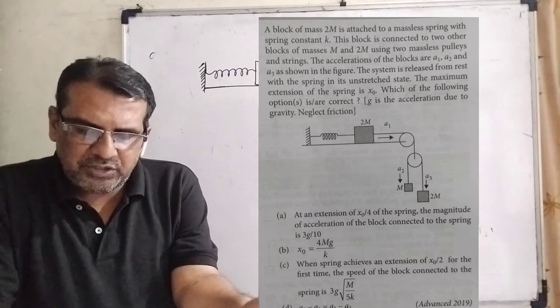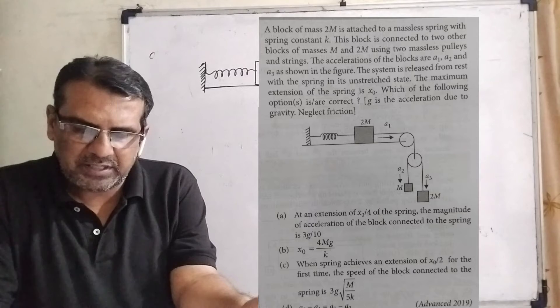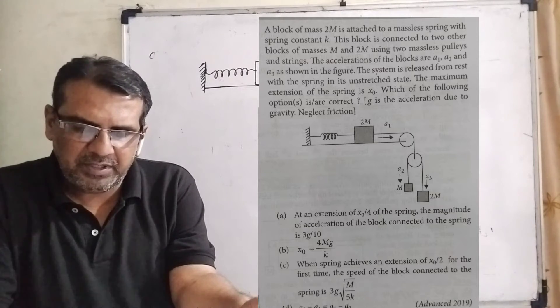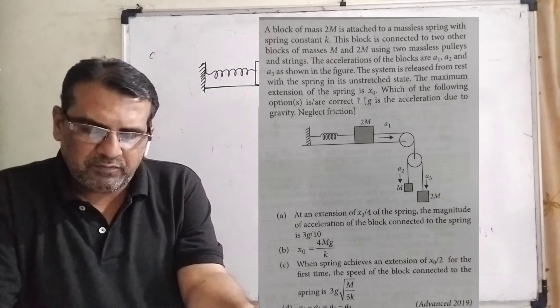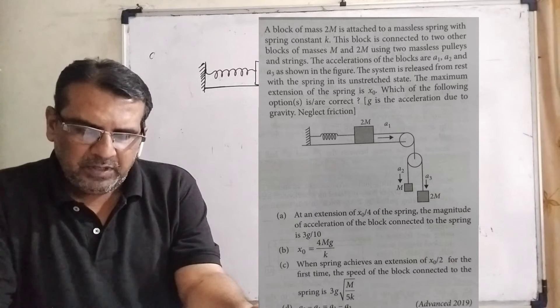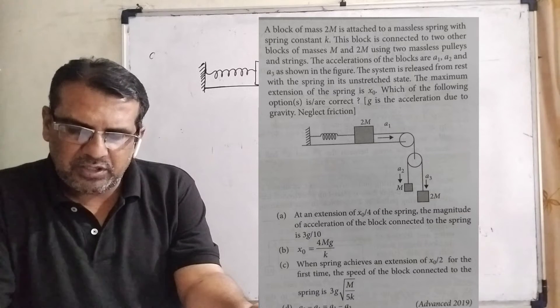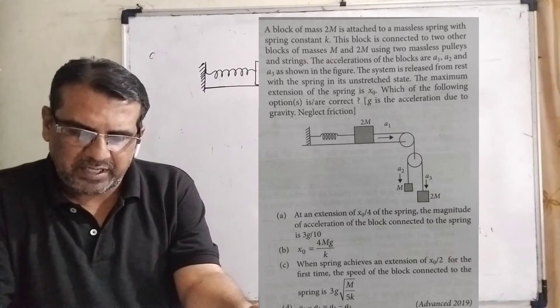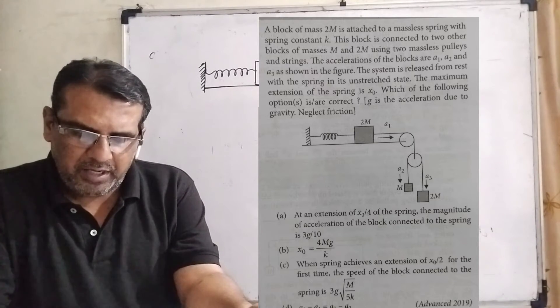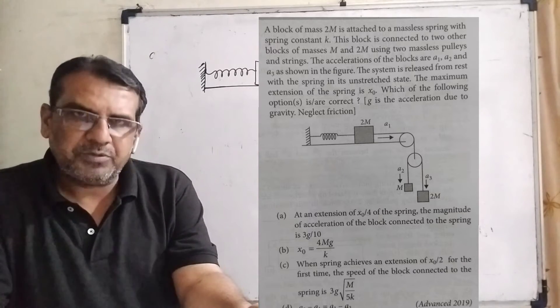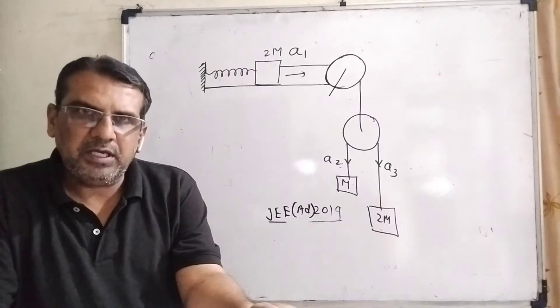What are the options given? Option A: at an extension of x0/4 of the spring, the magnitude of acceleration of the block connected to the spring is 3g/10. Option B: x0 = 4mg/k. Option C: when the spring achieves an extension of x0/2 for the first time, the speed of the block connected to the spring is 3g√(m/5k). Option D: a2 - a1 = a1 - a3.